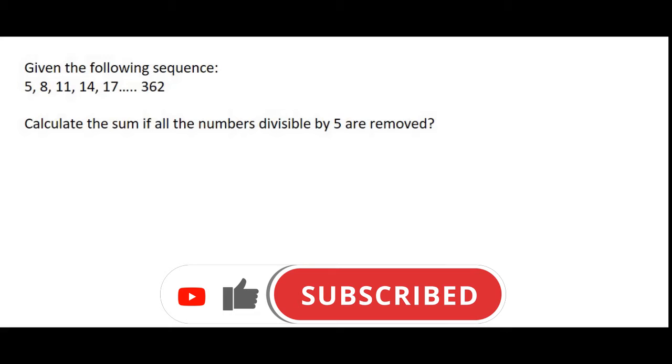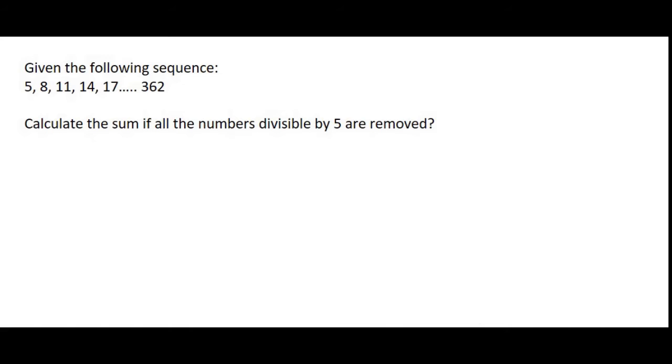So here we are given a sequence, and we are asked to calculate the sum if all of the numbers divisible by 5 are removed. So what you do is you forget about that part for now, and you just go calculate the sum of the sequence that you can see at the moment.